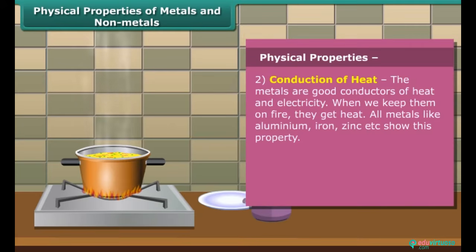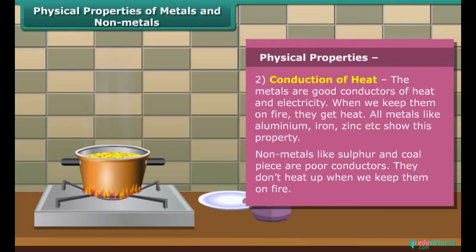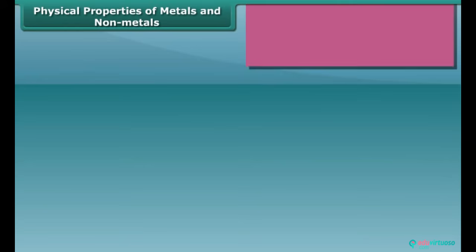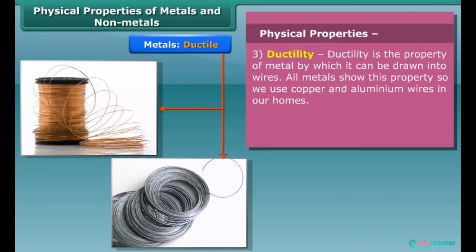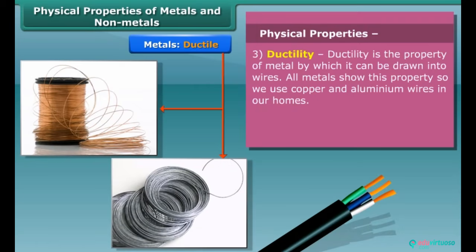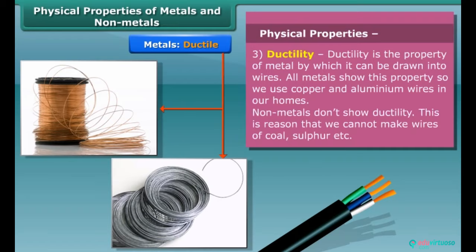The next property is conduction of heat. Metals are good conductors of heat and electricity, while non-metals are poor conductors. The property of a metal by which it can be drawn into wires is called ductility. It is the third property of metals. Non-metals don't show ductility.